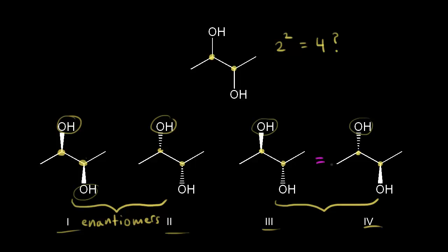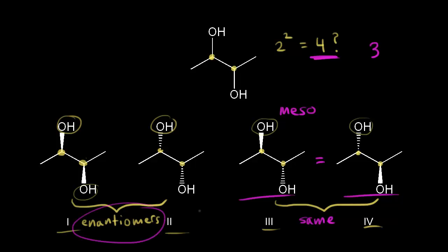So three and four actually represent the same compound — one meso compound. It's not really obvious looking at these bond line structures that they represent the same molecule, so definitely get a model set and try this out for yourself. We thought there might be four stereoisomers, but actually there are only three: a pair of enantiomers and one meso compound.